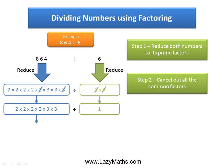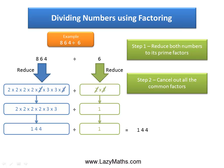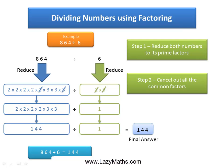Now we can simply multiply the leftover factors and we get 144 divided by 1, and hence the answer is simply 144. So 864 divided by 6 is equal to 144. And that's it. Thank you.